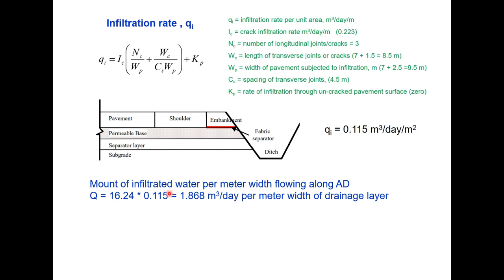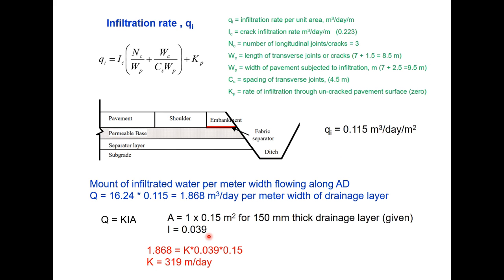Now the amount of infiltrated water per meter width flowing along AD will be 16.24 that is the length of the AD diagonal multiplied by 0.115 that is 1.868 meter cube per day per meter width of drainage layer. And this is Q equals KIA where K is the permeability, I is the gradient and A is the area of drainage path. So if you take 150 millimeter as the depth of the drainage layer which is given in the question, area will be 1 meter into 0.15 meter and I is 0.039 which we calculated, that the gradient along AD and that gives you the value of K as 319 meter per day. And you choose a grading which will give you the permeability of 320 meter per day. So that is how a drainage layer is designed.